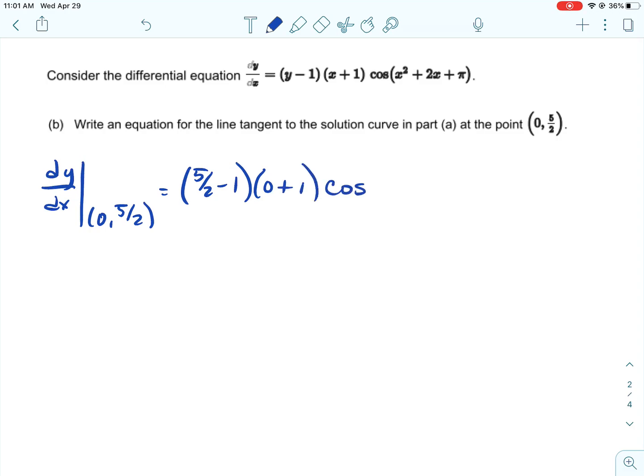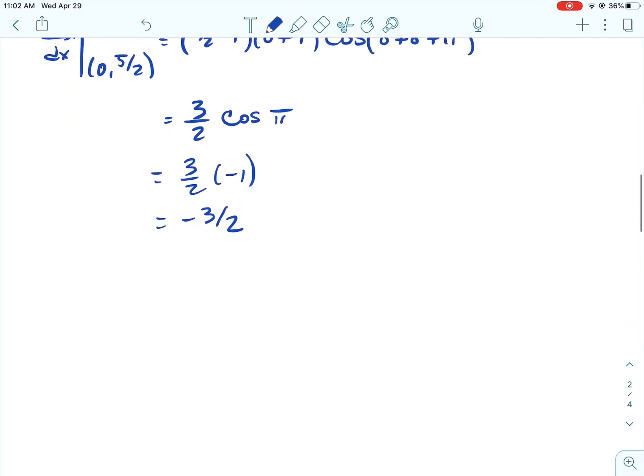And then we're going to do a tangent. So we need our slope. And our slope comes from our differential equation. So for y's, I'm putting in 5/2. And for x's, I'm putting in 0. So I'm going to get 3/2 times the cosine of π. The cosine of π is -1. So my slope is -3/2.